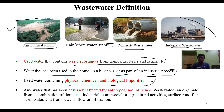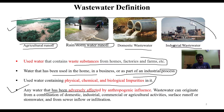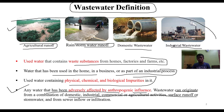Wastewater contains physical, chemical, and biological impurities. It exists in our environment and will always be there. It can also be defined as any water that has been adversely affected by anthropogenic influence, or water that originates from a combination of domestic, industrial, commercial, or agricultural activities.